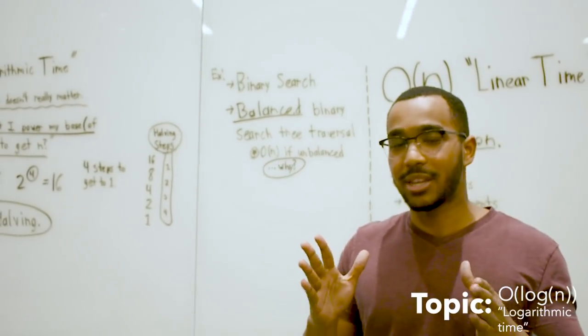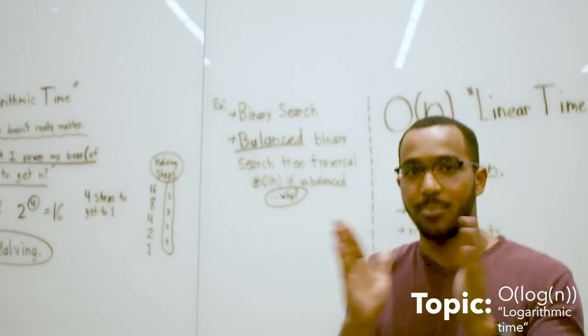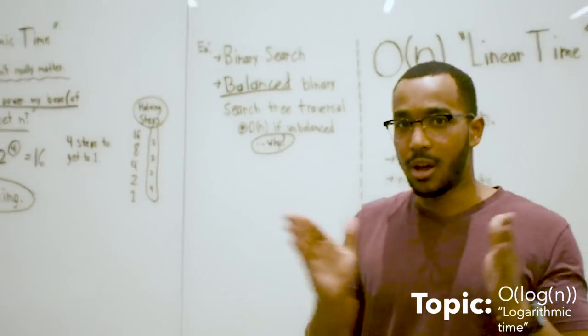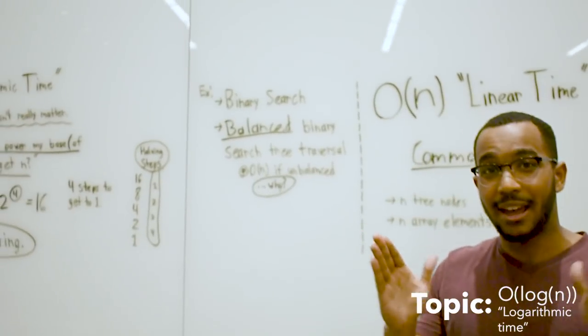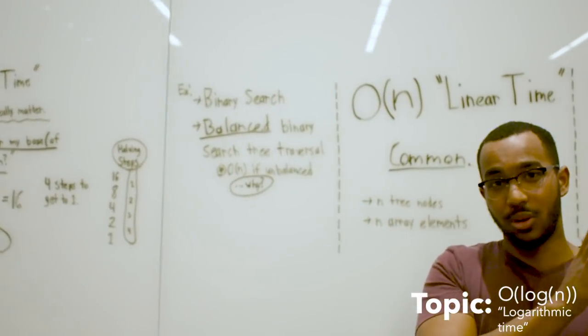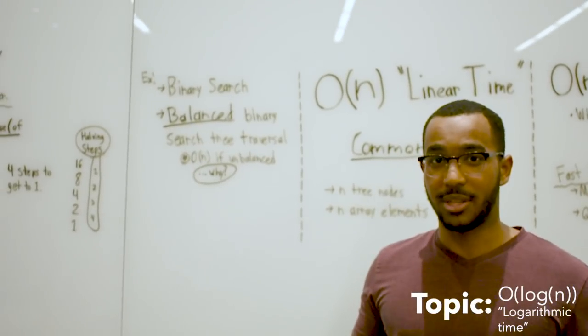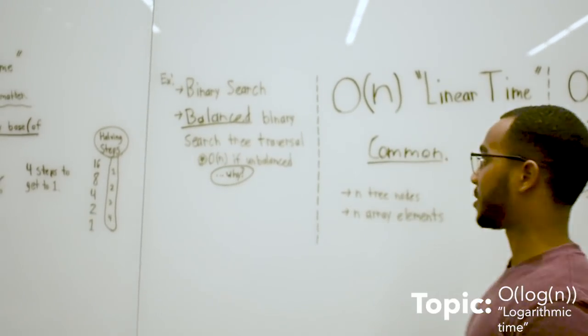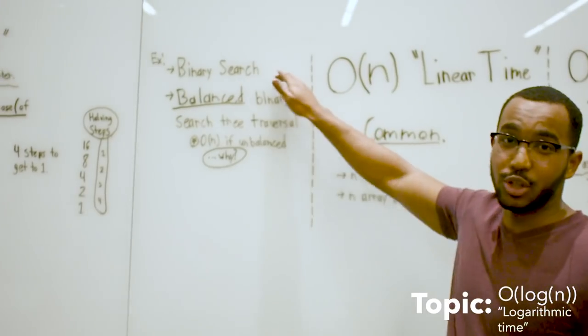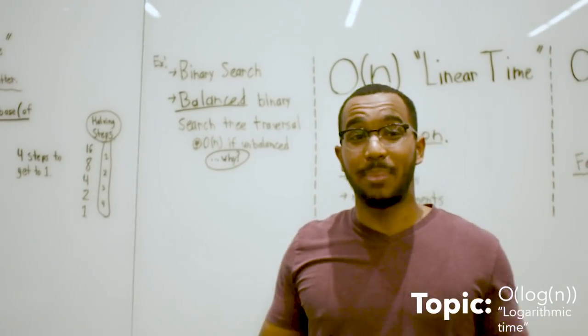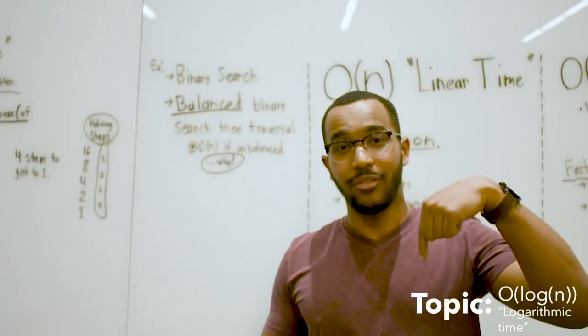Invariant just means something that's always true within our certain space of searching or performing work. It's the invariant that we can halve the search space and keep it sorted. This is where logarithms come into play. We're halving our search space.